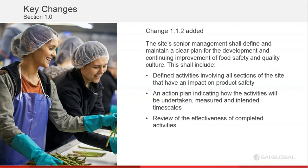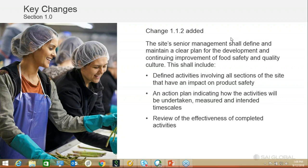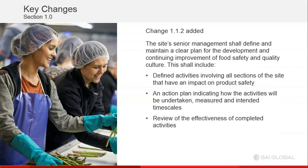Clause 1.1.2 has been added as a new clause, pushing the other clauses further down. It specifically states that the site's senior management shall define and maintain a clear plan for the development and continuing improvement of food safety and quality culture. This shall include defined activities involving all sections of the site that have an impact on product safety, an action plan indicating how the activities will be undertaken, measured and intended timescales, and review of the effectiveness of the completed activities.